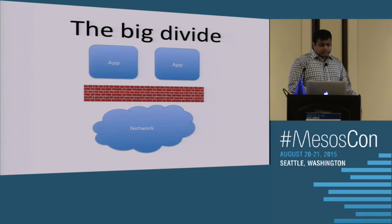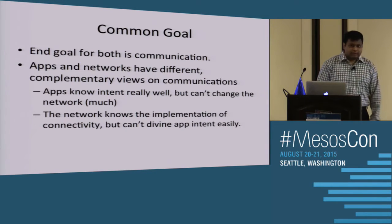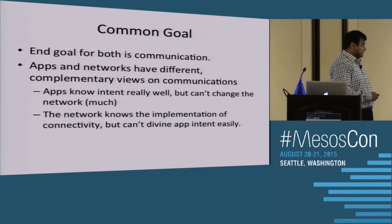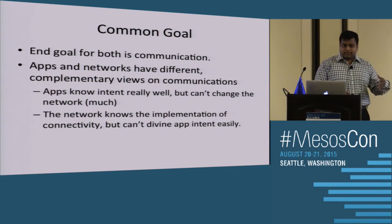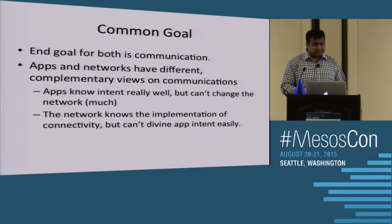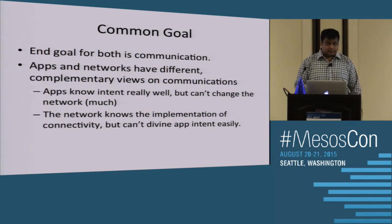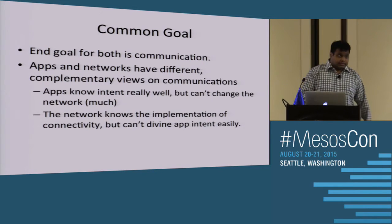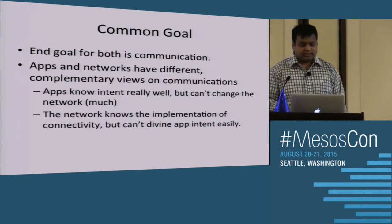Both ends have a common goal: efficient communication. Both sides bring a different but complementary worldview. Apps know their intent really well — they know exactly how and with whom they want to communicate — but they can't really inform or change the network much beyond QoS bits. On the other hand, the network really knows about how connectivity is being realized at the actual transmission layer, but it's very hard for the network to divine app intent.